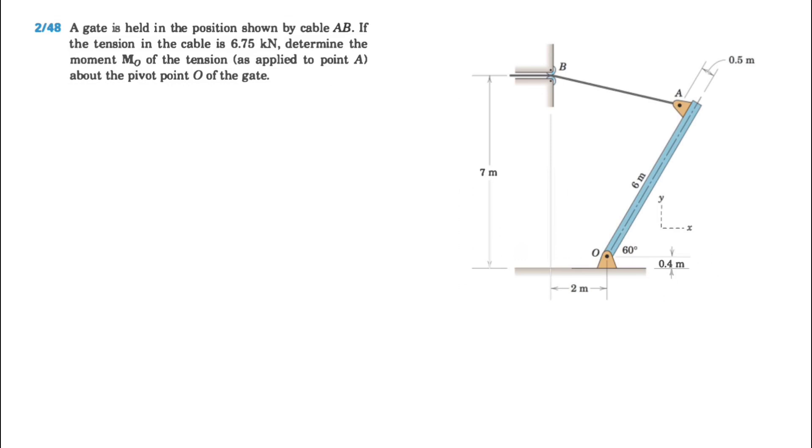We know the tension in the cable is 6.75 kilonewtons, and we need to determine the moment of tension applied at point A about the pivot point of the gate at point O.